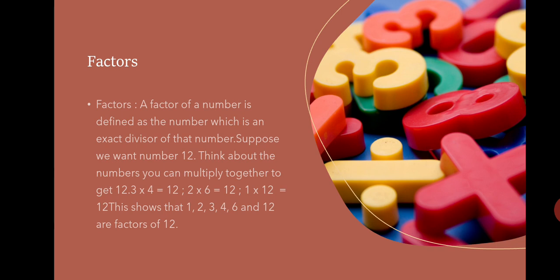Factors: A factor of a number is defined as a number which is an exact divisor of that number. Suppose we want to factor the number 12. Take the multiples of 12: 3 × 4 = 12, 2 × 6 = 12, 1 × 12 = 12. This shows that 1, 2, 3, 4, 6 and 12 are factors of 12.